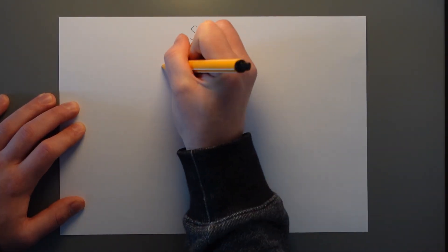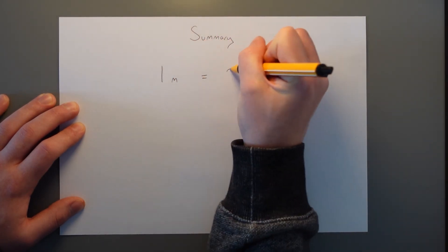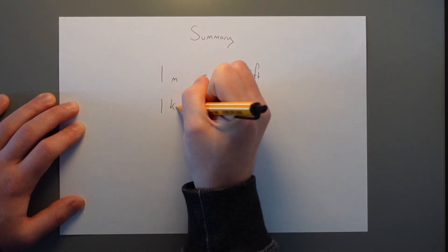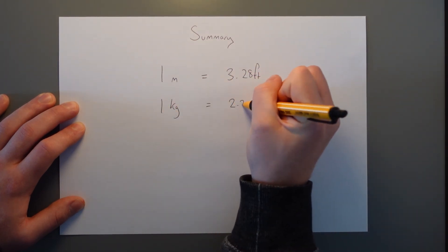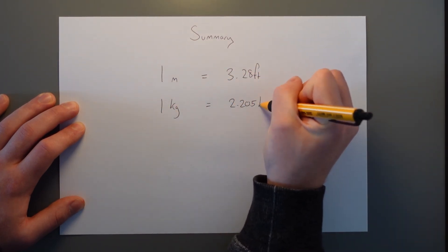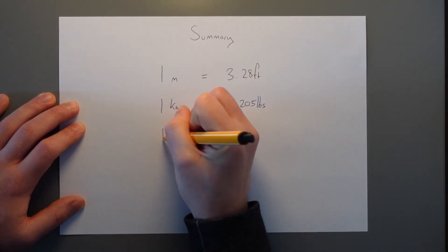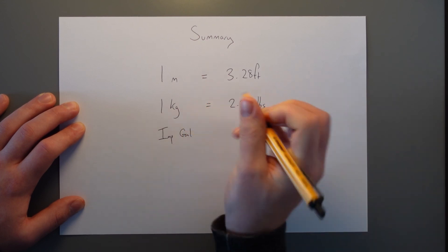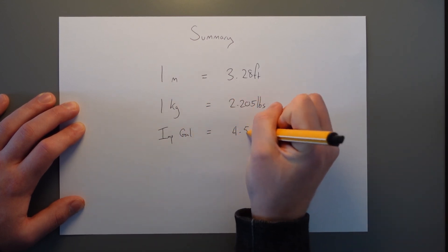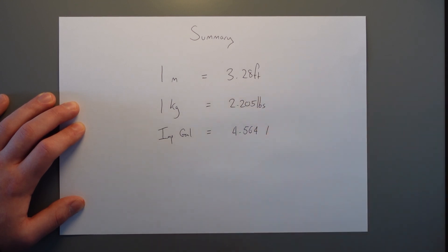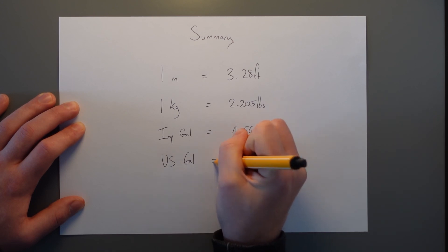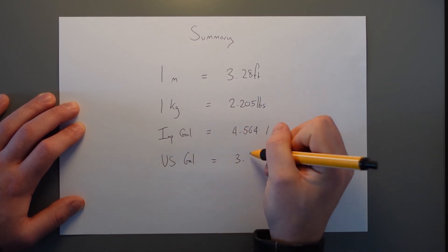To summarize, one meter equals 3.28 feet. One kilogram equals 2.205 pounds. One imperial gallon is equal to 4.564 liters. And one US gallon is equal to 3.785 liters.